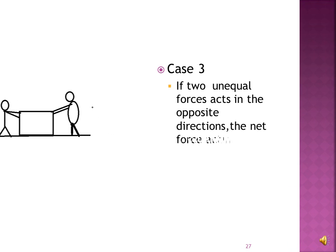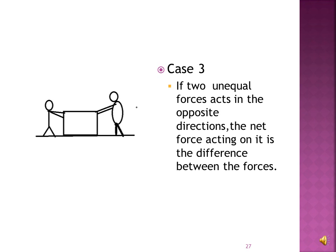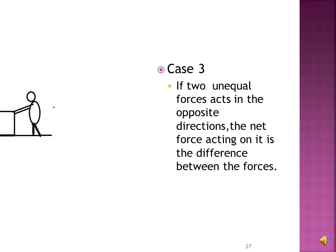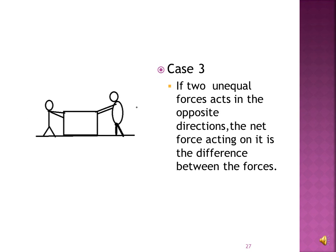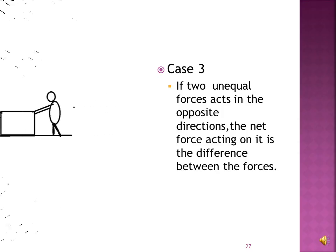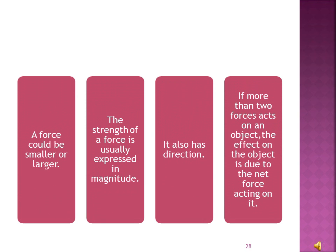A fat person and a lean man push the box from opposite directions. The box moves in the direction the fat man pushes. If two unequal forces act in opposite directions, the net force acting on it is the difference between the forces. A force can be smaller or larger; its strength is expressed in magnitude and it also has direction. If more than two forces act on an object, the effect is due to the net force.